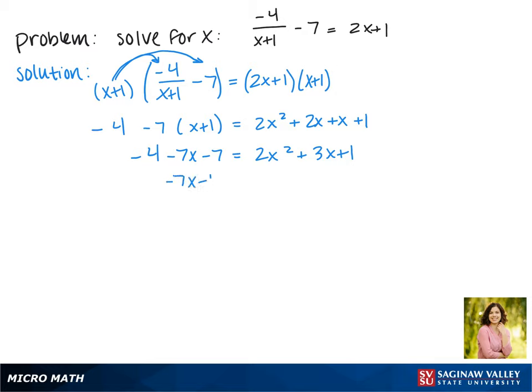Now we have negative 7x minus 11 equals 2x squared plus 3x plus 1.